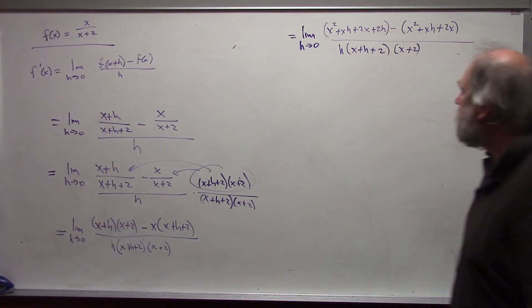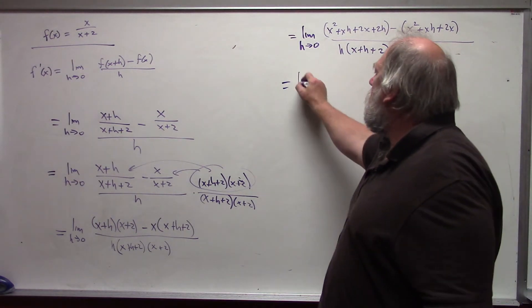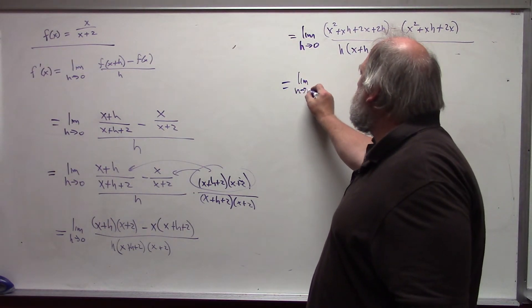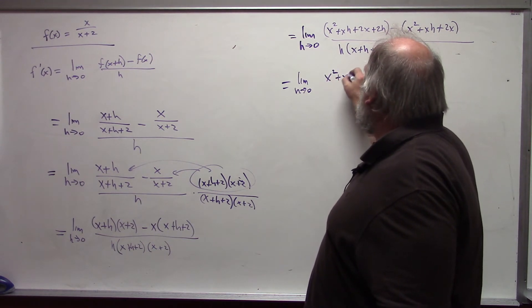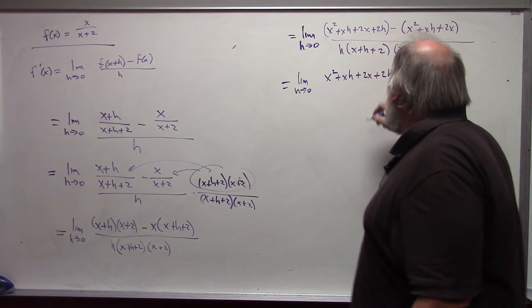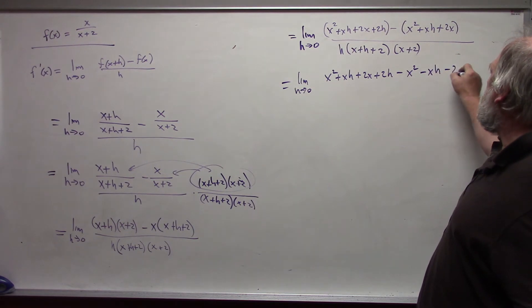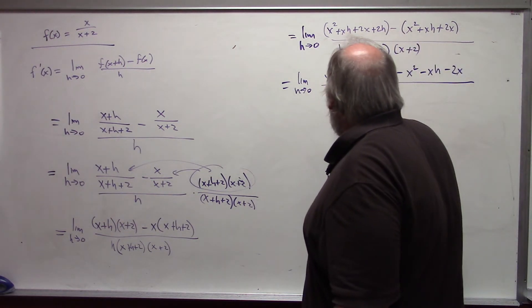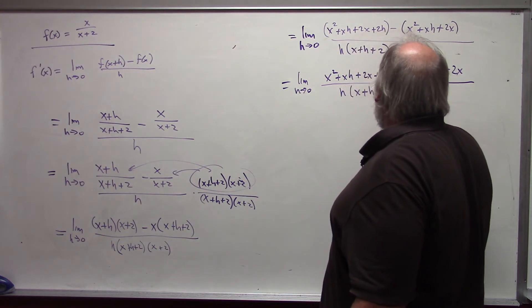This becomes limit h approaches 0, x squared plus xh plus 2x plus 2h, distributing minus, x squared minus xh minus 2x, all divided by h times x plus h plus 2 times x plus 2.